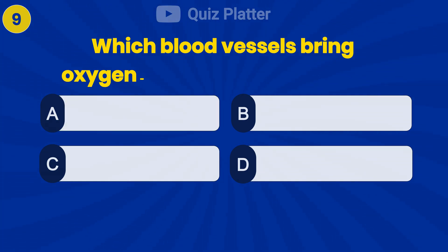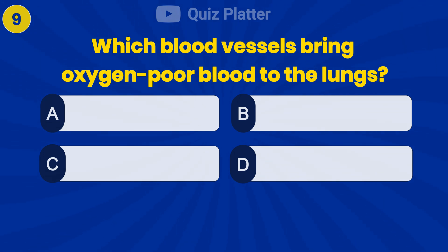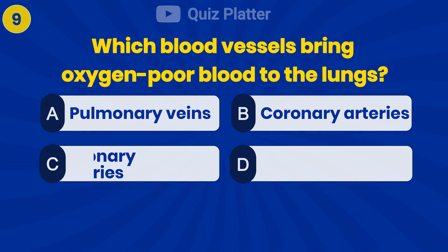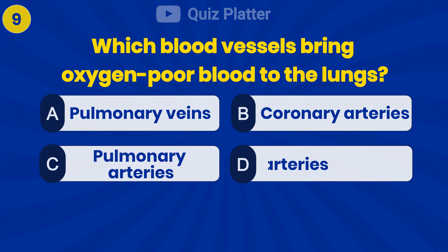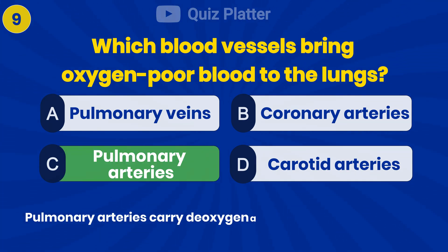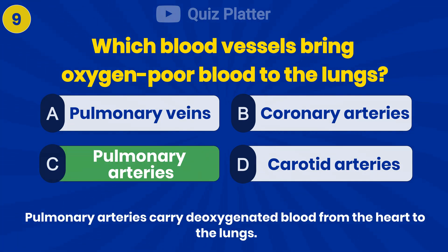Which blood vessels bring oxygen-poor blood to the lungs? Answer C: Pulmonary arteries.